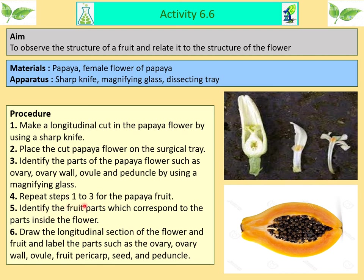Number four, repeat steps one to three for the papaya fruit. Then identify the fruit parts which correspond to the parts inside the flower. Finally, draw the longitudinal sections of the flower and fruit and label the parts such as ovary, ovary walls, ovules, fruit pericarp, seeds and peduncles.